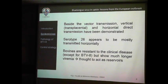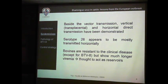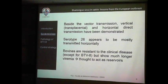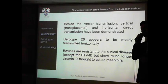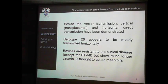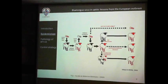Bovines used to be resistant to clinical disease — never before BTV-8 had clinical signs been described in cattle. But this serotype is different. Interestingly, bovines show a much longer viremia of several months at least, and play an important role as a reservoir for transmission of the disease to small ruminants, which are the main targets of Blue Tongue.